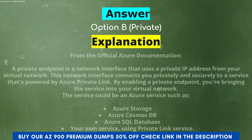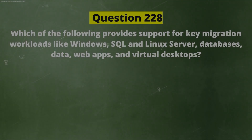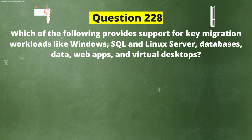Explanation: A private endpoint is a network interface that uses a private IP address from your virtual network. This network interface connects you privately and securely to a service powered by Azure Private Link. By enabling a private endpoint, you are bringing the service into your virtual network. The service could be Azure Storage, Azure Cosmos DB, Azure SQL Database, or your own service using Private Link Service.